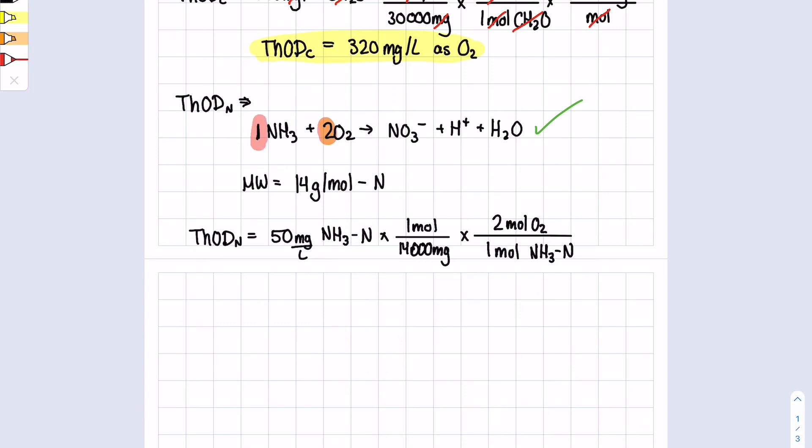Then we'll multiply it by the molecular weight of oxygen, which is 32,000 milligrams per mole. Milligrams will cancel, our chemical cancels, our mole cancels, and we end up with milligrams per liter in oxygen again, which is perfect.